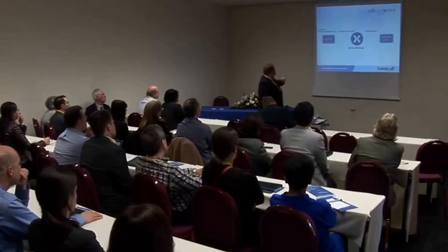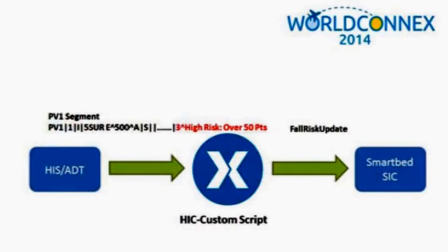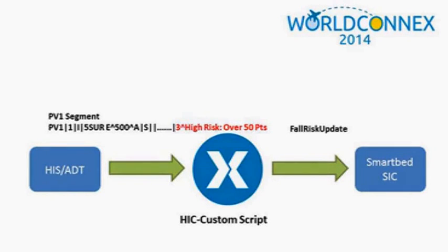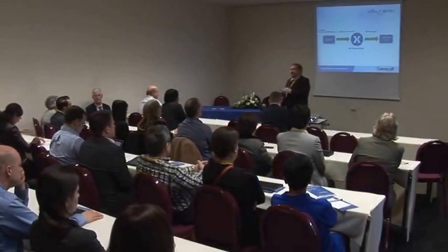Here's an example of an ADT message that contains the fall risk score. That information, available in the HIS ADT, can be retrieved by Konexol, which in turn communicates it to the Stryker smart bed component and automatically updates the bed profile with the correct fall risk.